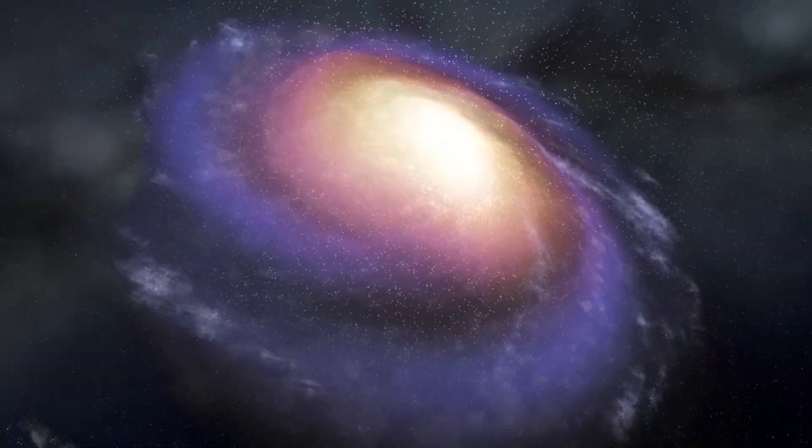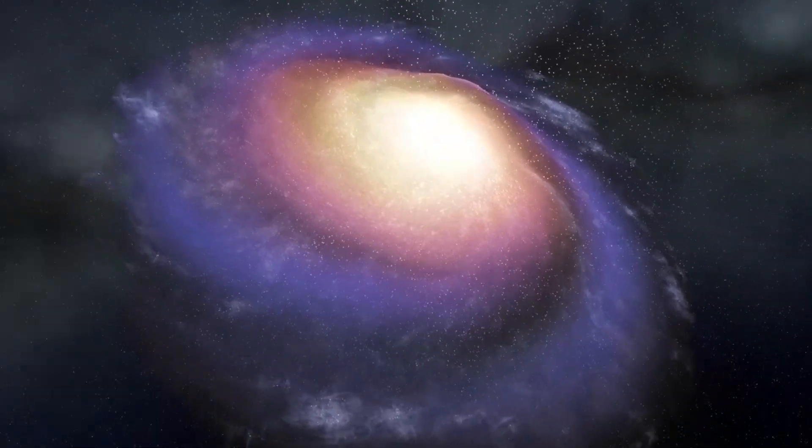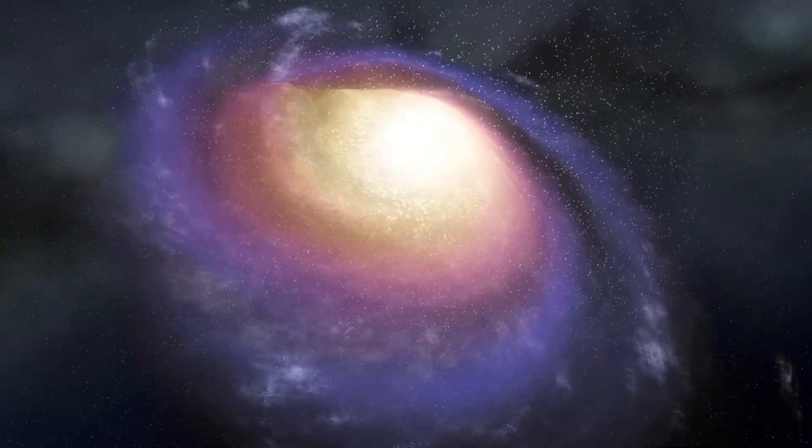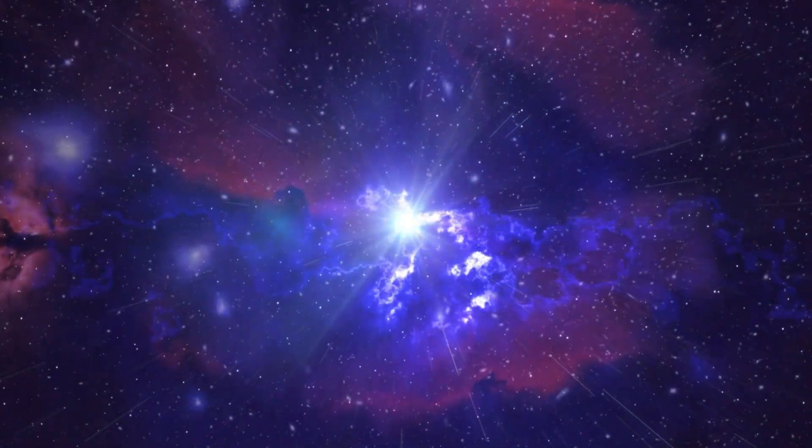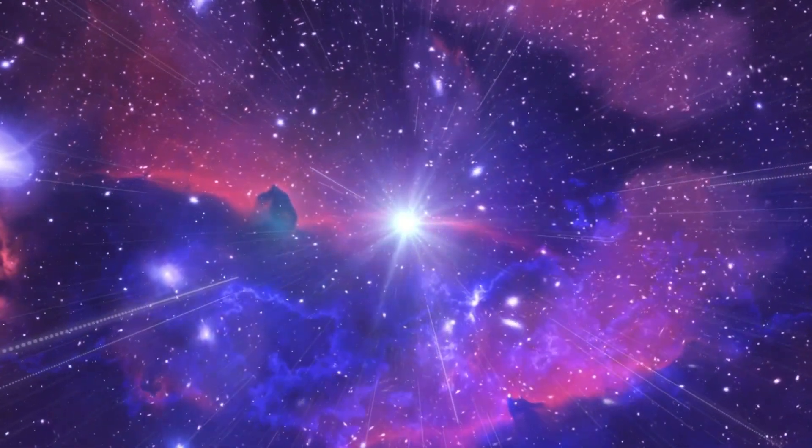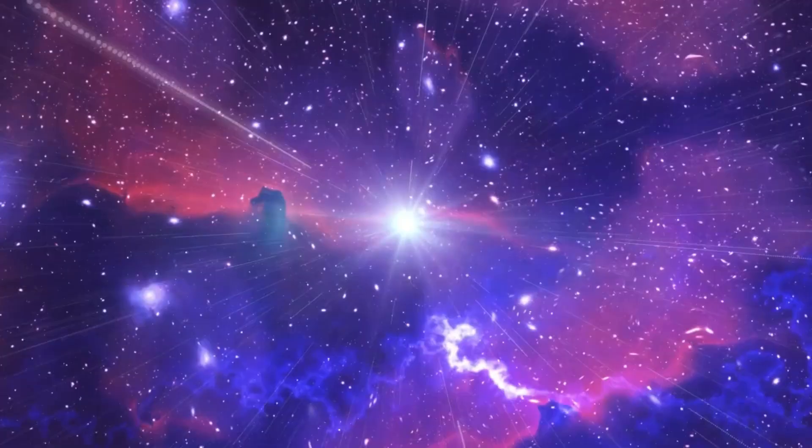The Boötes void has a diameter of around 330 million light-years, located near the Boötes cluster of stars and roughly 700 million light-years from us. Initially, this void had only one galaxy. However, since its discovery, we have found a couple dozen more.